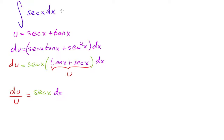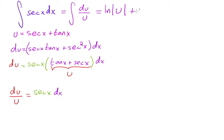That means this integral is equal to the integral of du over u. All we did is divide both sides by u — because tangent plus secant is u. So we just get du over u equals secant x dx. The integral of that is ln|u| plus c, which is ln|secant x + tangent x|.